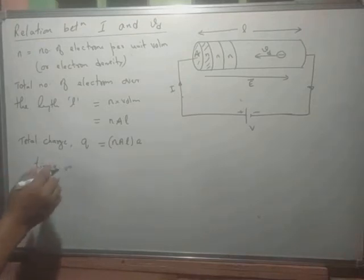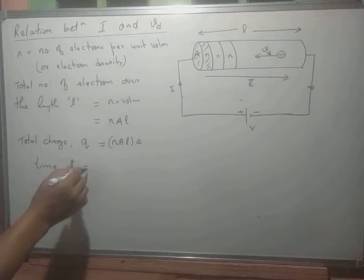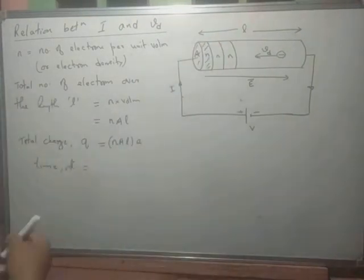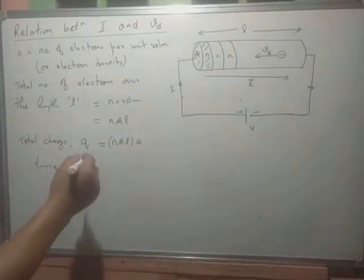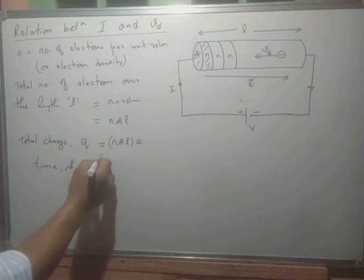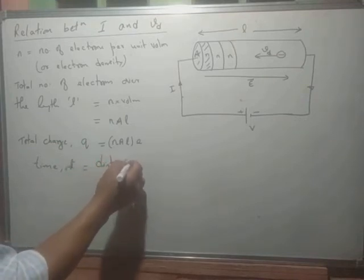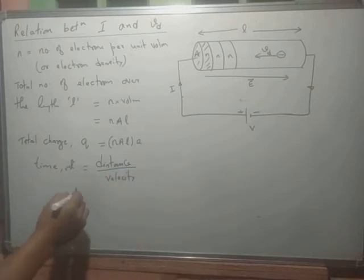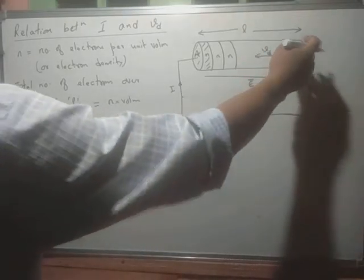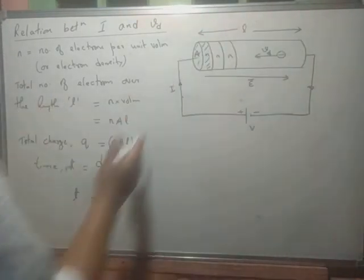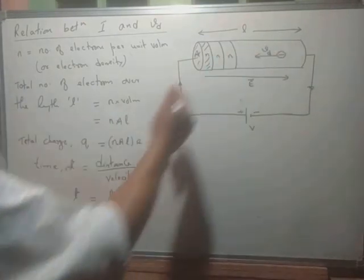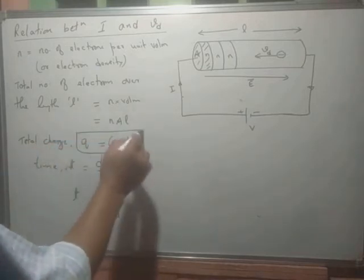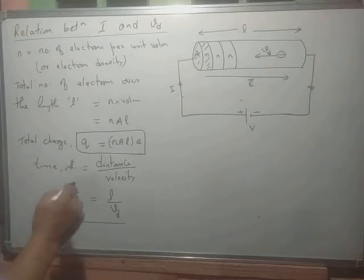Next, the time taken by the electrons to cross from one end of the conductor to the other is defined as distance divided by velocity. The distance traveled is the length L, and the velocity is the drift velocity V_D, so t = L / V_D.